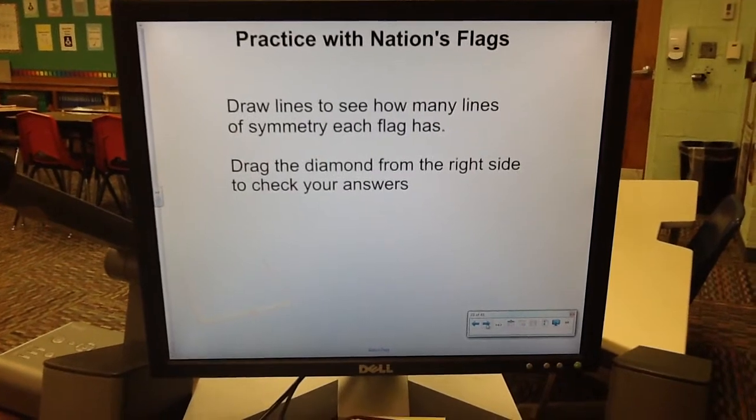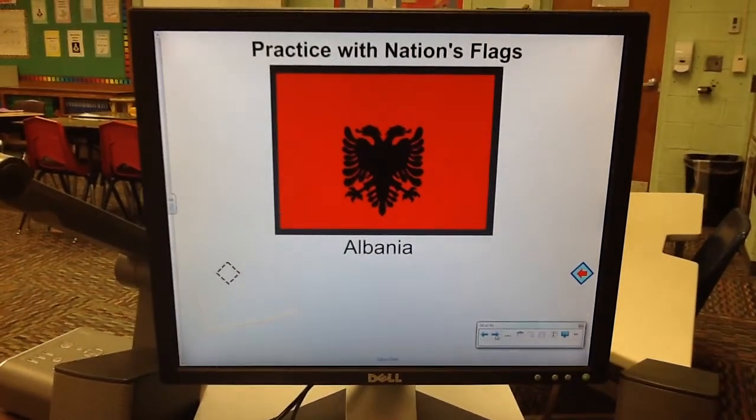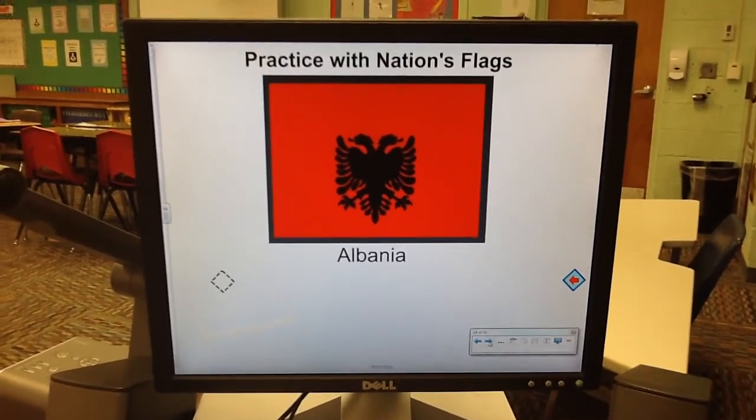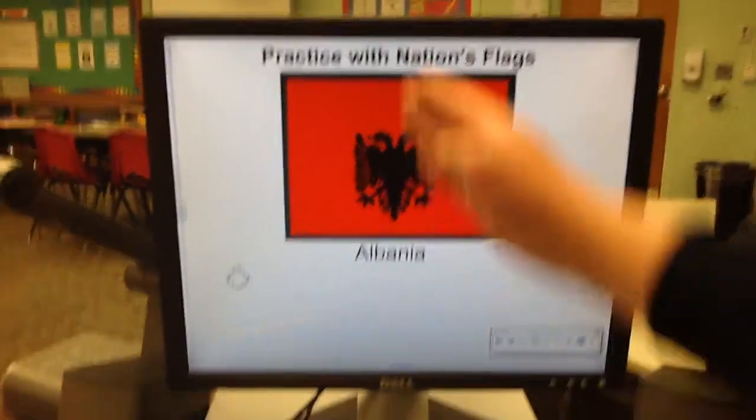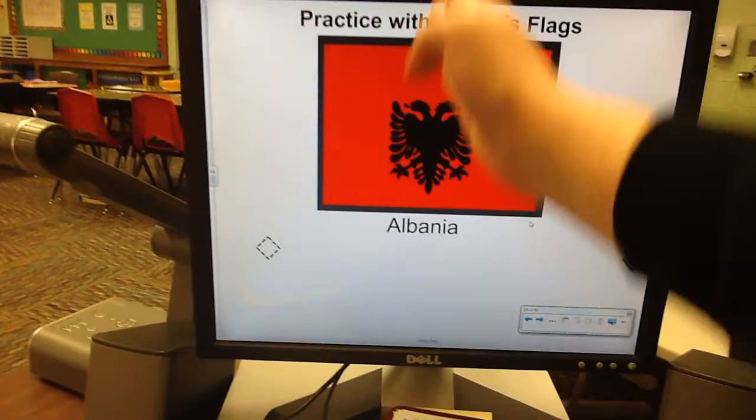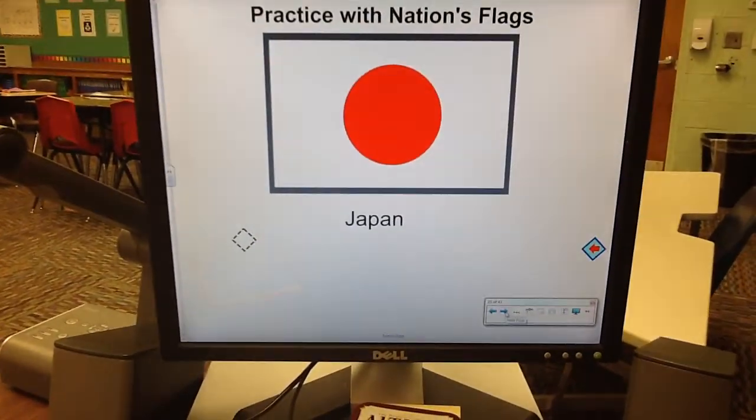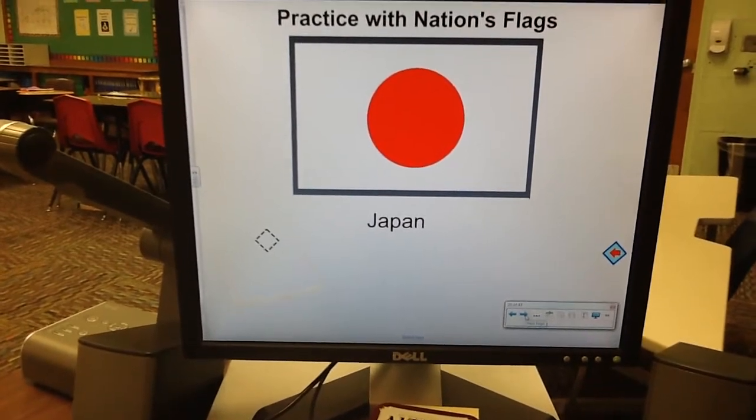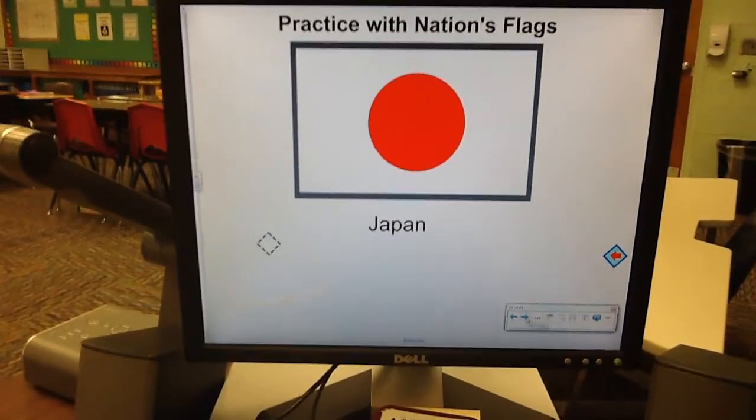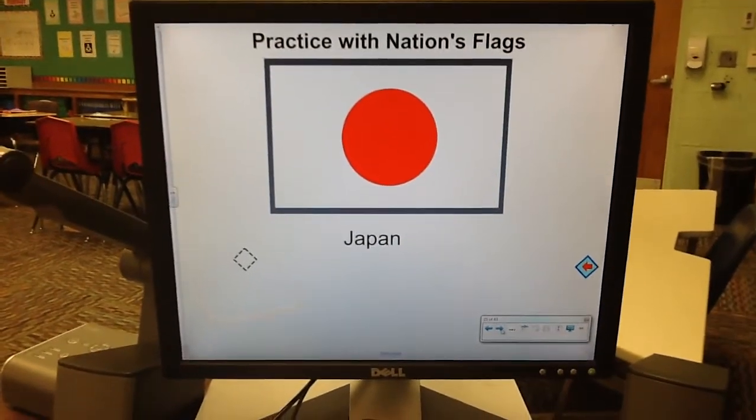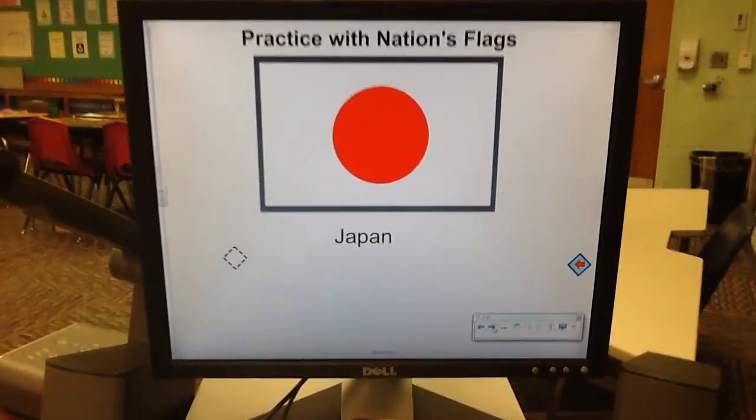Let's practice with some nation's flags. Albania. How many lines of symmetry do you think? I'm guessing one. You can go right down the middle, fold it over. What about Japan? That's a tricky one. Why don't you write an answer, and I will not tell you the answer. We will look at it tomorrow as a class. Bring your answer with you.